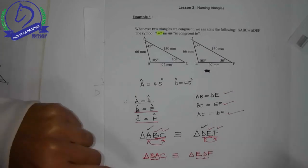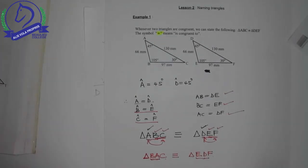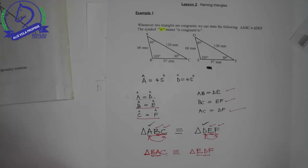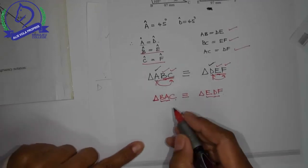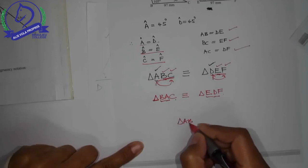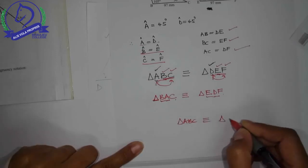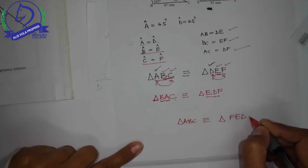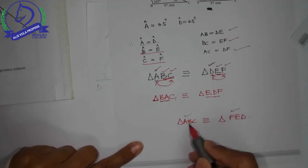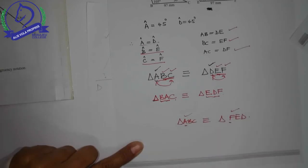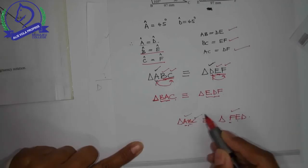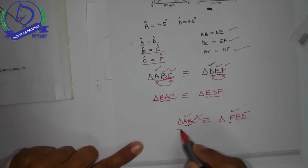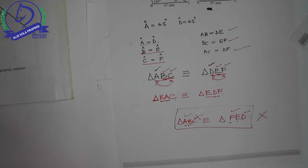BC is equal to EF. So naming triangles is essential. Now what will be considered incorrect naming of triangles? So if I say triangle ABC is congruent to triangle FED - angle A and angle F are not equal. Angle B is equal to angle E, that's fine. But angle C is not equal to angle D. So this is incorrect naming of triangles.